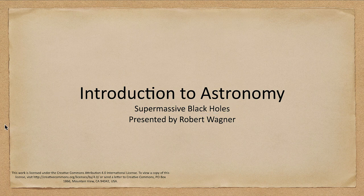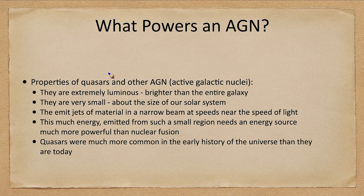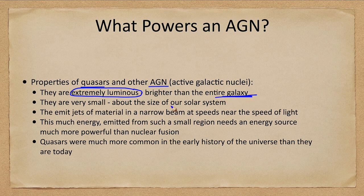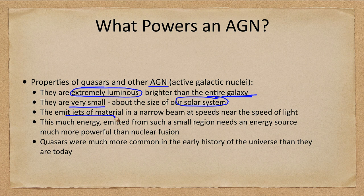So what is the energy source? What powers this? The power properties of the quasars and galaxies are that they are extremely luminous — brighter than the entire galaxy. Remember how we could only see quasars as looking like a star because of how bright the central portion of the galaxy was. They're very small, only about the size of our solar system, and they emit jets of material in a narrow beam at speeds very close to the speed of light.